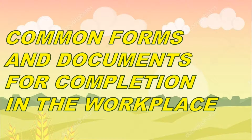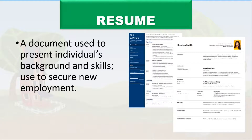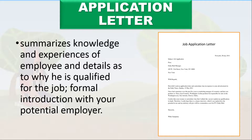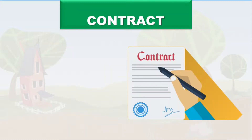Common forms and documents you need to complete in the workplace. First, a resume — a document used to present an individual's background and skills, used to secure new employment. It should contain all your information including previous work, skills, objectives, and contact information. Second, an application letter — it summarizes the knowledge and experiences of an employee and details why he or she is qualified for the job. It serves as a formal introduction with your potential employer and comes together with the resume.